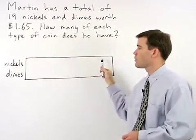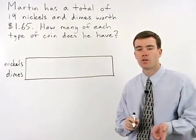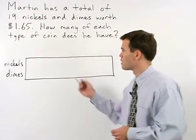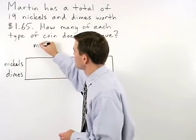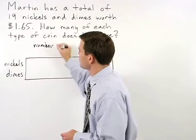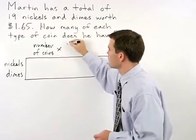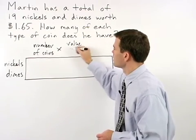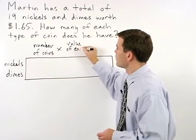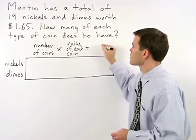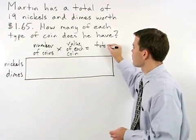Across the top, we'll have our formula, which we talked about in the previous example. Number of coins times the value of each coin equals their total value.